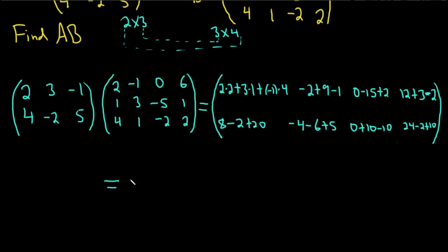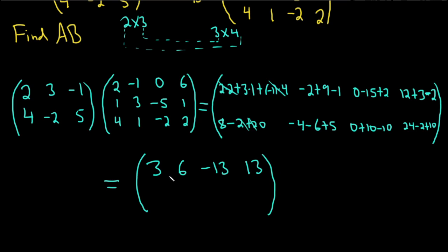Let's clean this up. For row 1: 4 plus 3 minus 4 gives 3. Then negative 2 plus 9 minus 1 gives 6. Then 0 minus 15 plus 2 is negative 13. Then 12 plus 3 minus 2 is 13. For row 2: 8 minus 2 plus 20 is 26 — I made a mistake there initially, that's a 20 not a 2. Then negative 4 minus 6 plus 5 is negative 5. Then 0 plus 10 minus 10 is 0. And 24 minus 2 plus 10 is 32. That is the product of the matrices.